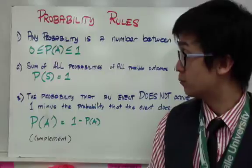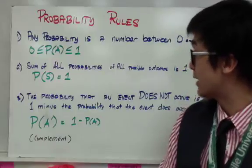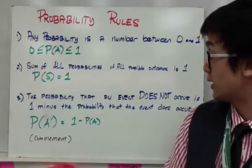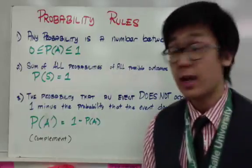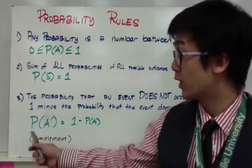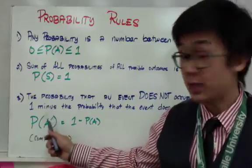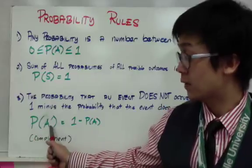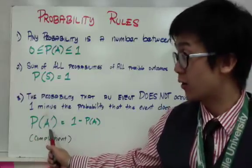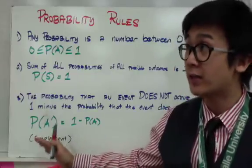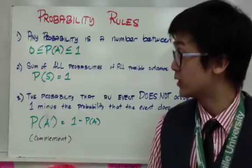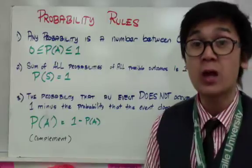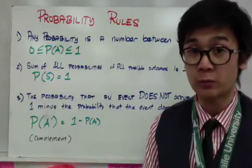The third property is that the probability that an event does not occur is 1 minus the probability that the event does occur. We call this the complement. P of A prime means we're looking at the complement of event A, or event A not happening. These are the probability rules to keep in mind when answering questions involving probability.